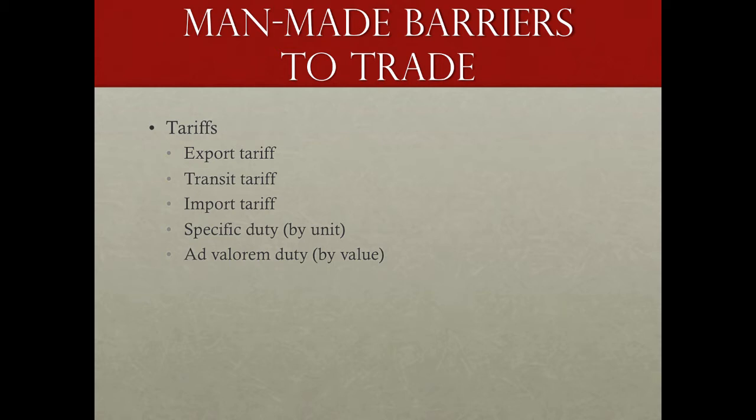First, we have tariffs — probably the most common form of a barrier to trade. A tariff is a tax on the movement of goods across a national border. In the case of an export tariff, you are moving goods out of the country, exporting them to another country, and the home country government is charging a tax on those goods being exported.